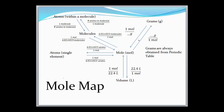Let's say we had 0.5 moles of something and we wanted to convert that to grams. We would put one mole in the denominator and grams in the numerator — grams are always obtained from the periodic table. So if this were moles of hydrogen, one mole of hydrogen per mole. If we were going from grams to moles, grams would be in the denominator, one mole in the numerator. Moles to volume: the conversion is one mole to 22.4 liters. The reverse is just taking the reciprocal of that conversion.